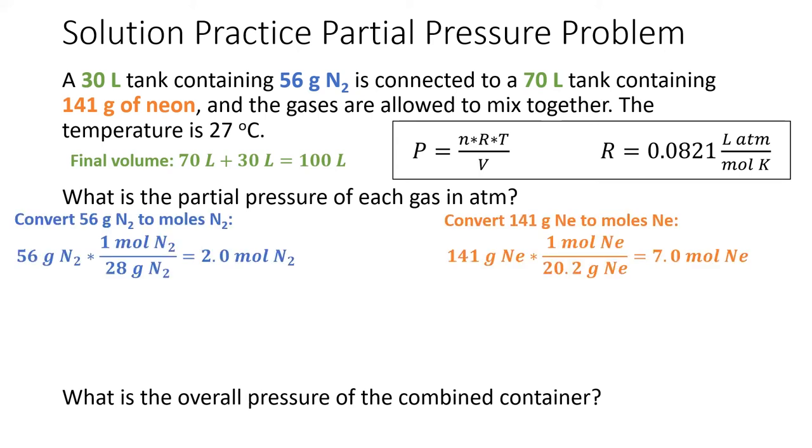Then, in order to find the partial pressure of each gas, first calculate the moles of that gas. I get 2 moles of nitrogen and 7 moles of neon.